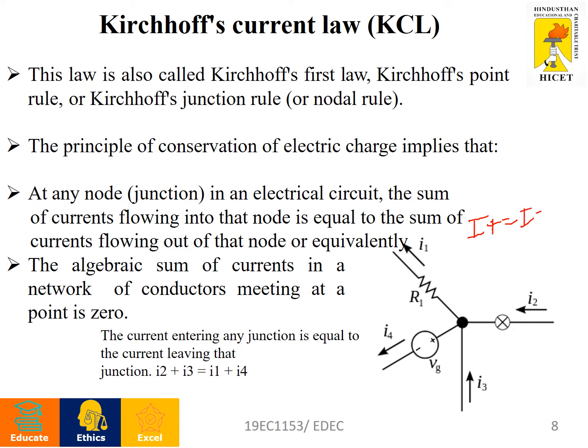Here I⁺ is the sum of currents entering a node and I⁻ is the sum of currents leaving the node. In the diagram, I1 and I4 are leaving the node while I2 and I3 are entering the node. So entering current equals leaving current: I2 + I3 = I1 + I4. This is Kirchhoff's Current Law.